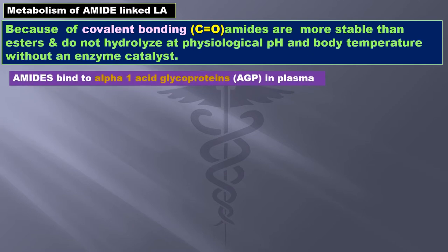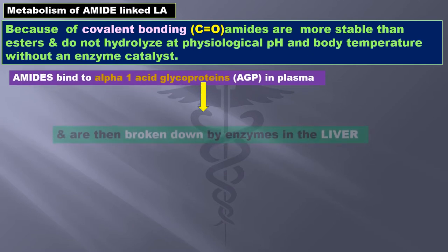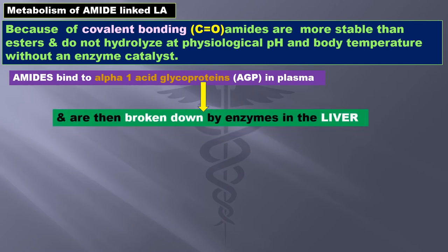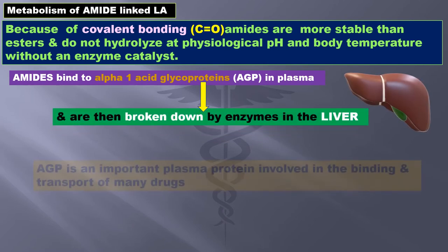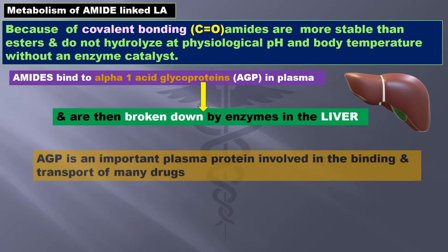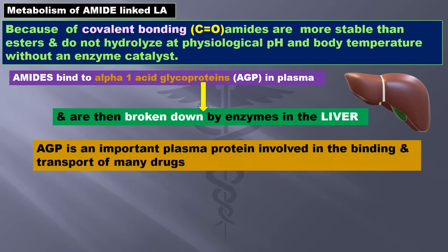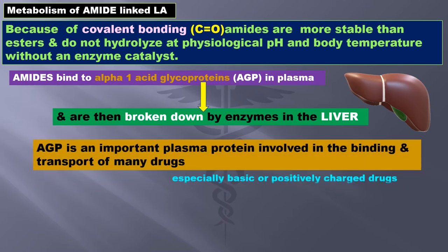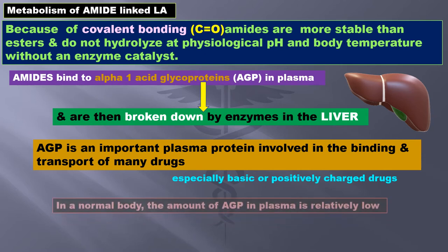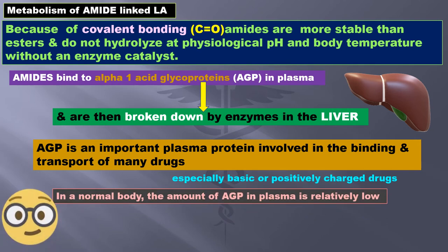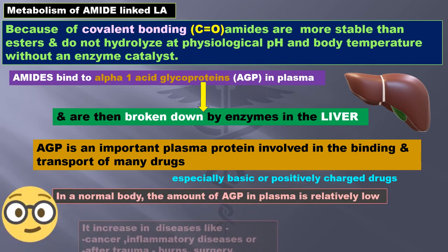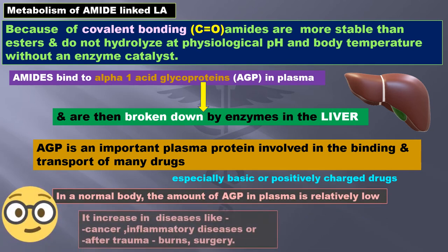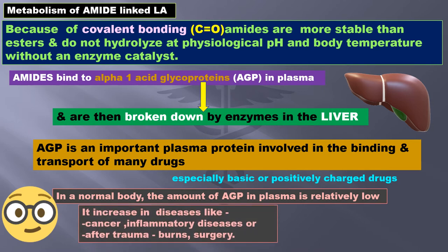Amides bind to alpha-1 glycoproteins (AGP) in plasma and are then broken down by enzymes in the liver. AGP is an important plasma protein involved in the binding and transport of many drugs, especially basic or positively charged drugs. In a normal body, the amount of AGP in plasma is relatively low. It increases in diseases like cancer, inflammatory disease, or after trauma like burns or surgery.